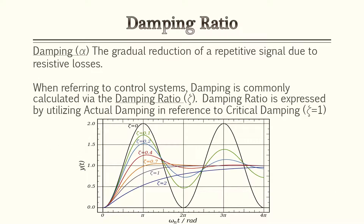So what is damping ratio? Let's first understand damping. Damping is the gradual reduction of a repetitive signal due to resistive losses. Think of dropping a pebble in a pond — when you drop that pebble you have waves initially, and then over time it will gradually smooth out and level out the water. In control systems, damping is commonly calculated through the damping ratio.